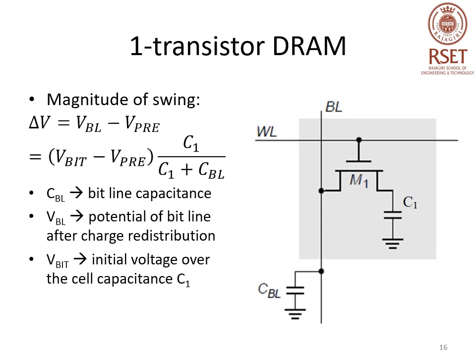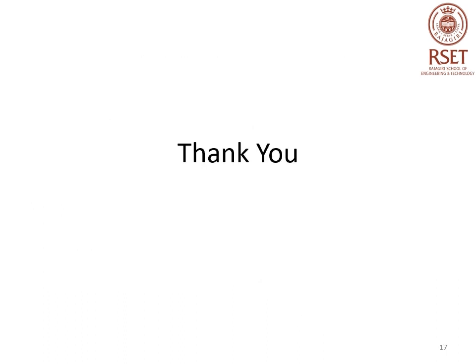In one transistor DRAM, activating the word line causes charge redistribution between the bit line and storage capacitor, resulting in a voltage change on the bit line. The magnitude is given by: ΔV = (V_bit − V_PR) × C1 / (C1 + CBL), where the voltage is of lower magnitude, typically around 250 millivolts. The capacitance ratio C1 / (C1 + CBL) is called the charge transfer ratio, with a typical range of 1 to 10 percent. That concludes the lecture on DRAM covering three transistor and one transistor DRAM cells. Thank you.